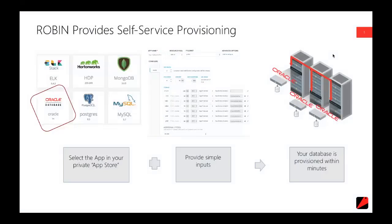When you pull up Robin, it presents a marketplace-like feel — sort of an app store-like interface through the console — whereby any user, any consumer of any one of these technologies, can very easily simply click on that application. Upon doing that, they're presented with a provisioning workflow. This is a consistent workflow, regardless of whether it's Oracle single instance, RAC, or any other application.